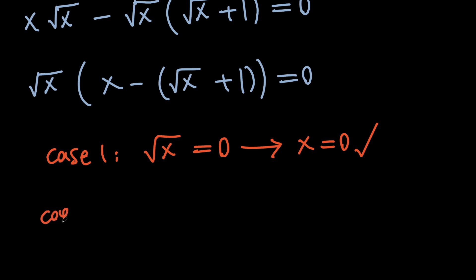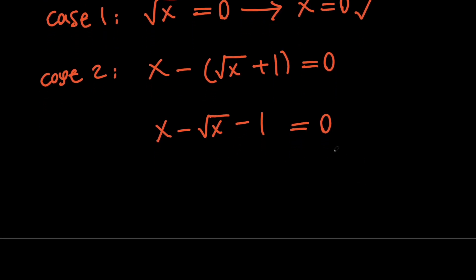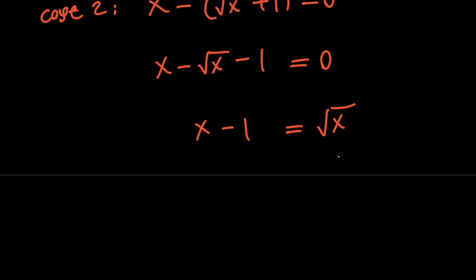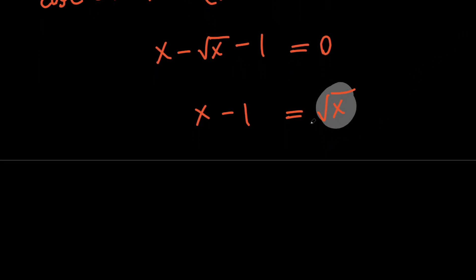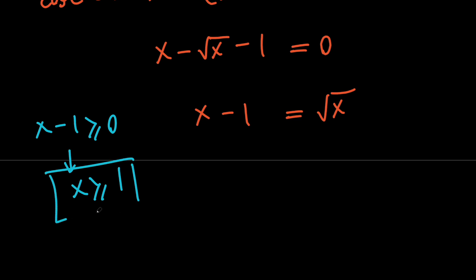In the second case, we're going to have x minus the quantity (root x plus 1) equals 0. So the left-hand side is x minus root x minus 1 equals 0. I'm going to move the square root to the right-hand side to isolate it, giving x minus 1 equals the square root of x. Notice that the right-hand side is not negative, therefore the left-hand side must be non-negative as well. So x minus 1 is non-negative, which means x is greater than or equal to 1. This is our second condition for this case.